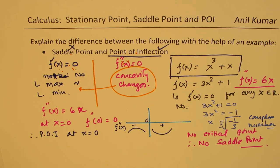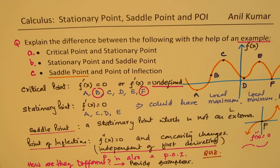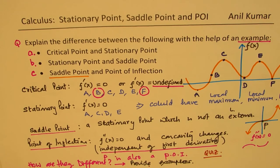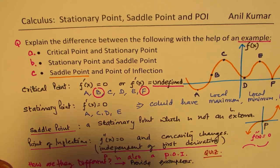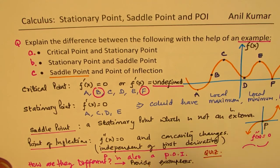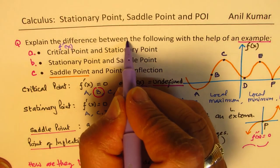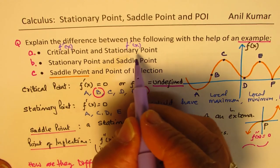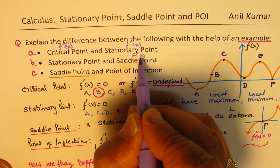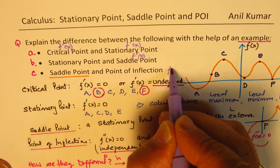With that, we end this video. A critical point is a point where we have the first derivative as zero or undefined. A stationary point is also defined with the first derivative equal to zero. A saddle point also involves the first derivative. But point of inflection is with the second derivative, and plus concavity.